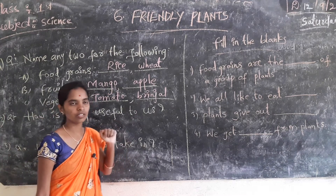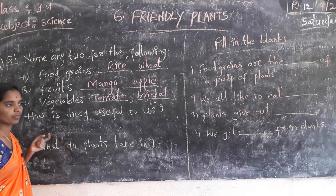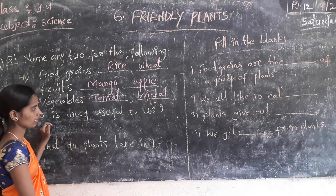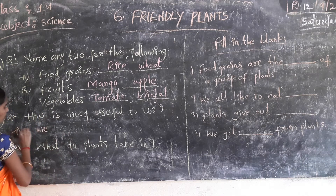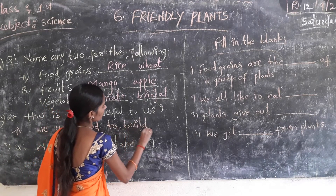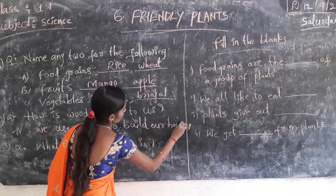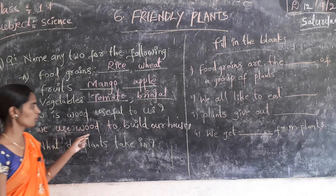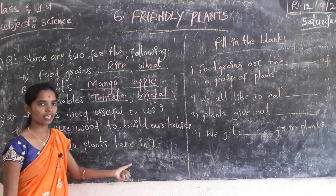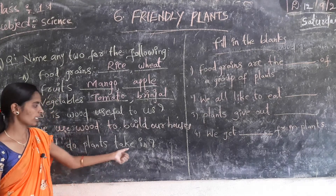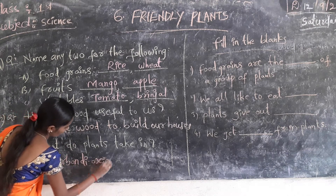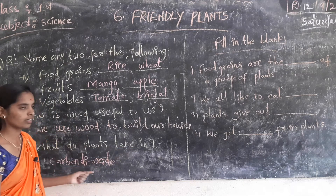Next question: How is wood useful to us? We use wood to build our houses. Next question: What do plants take in? Plants take in carbon dioxide and give out oxygen.